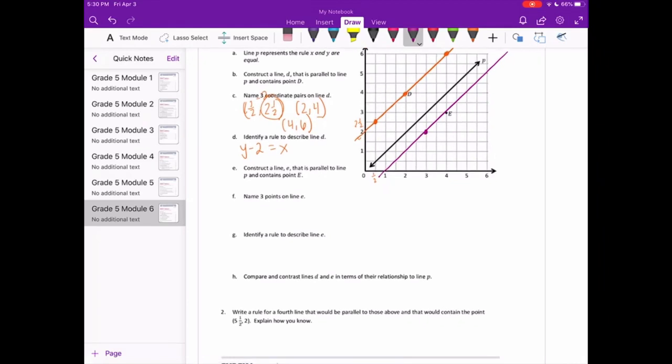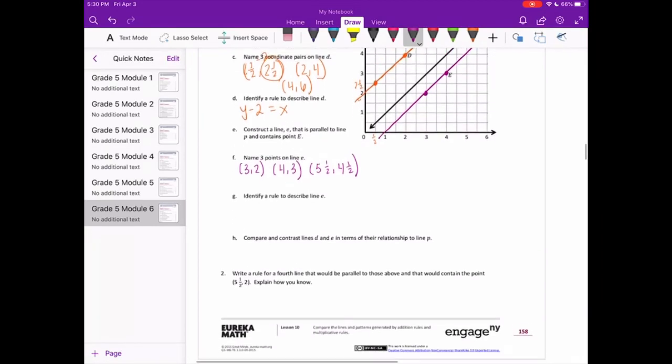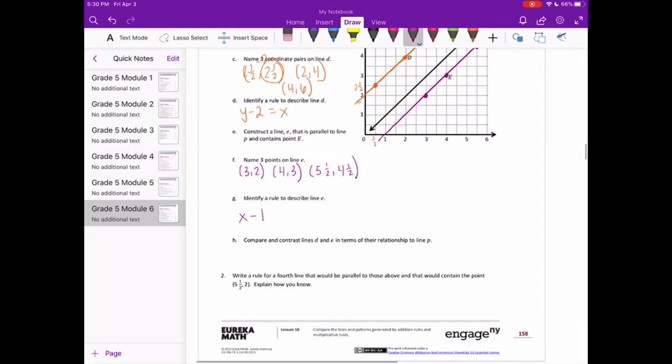And name 3 points on line E. I'll start with this one, that is 3, 2. And E is 4, 3. And this one is 5 and a half, 4 and a half. So here I'm noticing that if we take X and subtract 1, we get Y. So we could say X minus 1 equals Y. 3 minus 1 is 2, 4 minus 1 is 3, 5 and a half minus 1 is 4 and a half.